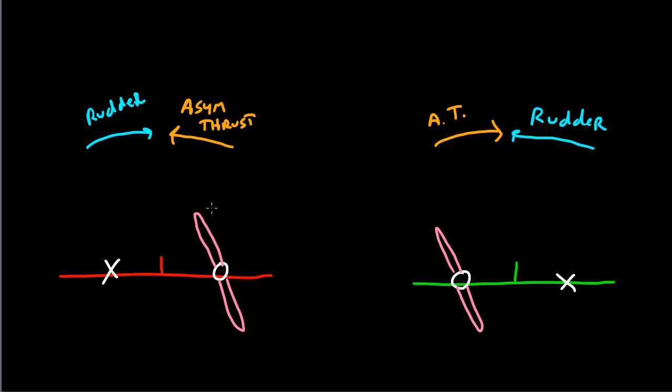Now, in each case, the propeller rotates in the same direction, this way. And therefore, there will be an opposing force attempting to rotate the rest of the airplane this way. We call this torque.